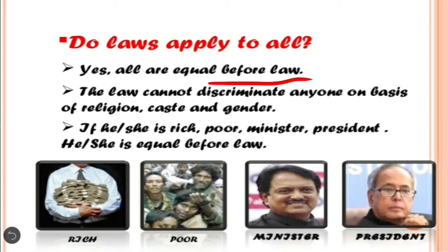For example, if a crime is committed by any authority, any dignitary, and the same crime is committed by a poor person, then the punishment decided for that crime will be the same. It is not like the rich person or any dignitary will be barred from punishment. The punishment will be the same for the same crime, whether a rich or a poor person. And also on the basis of religion, there is no discrimination — A religion, B, or any other religion, or any gender, male or female. The punishment is the same and everybody is equal before the law.